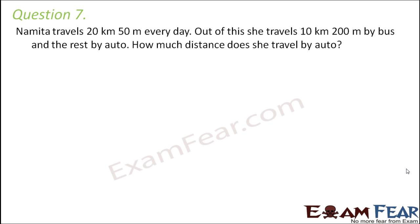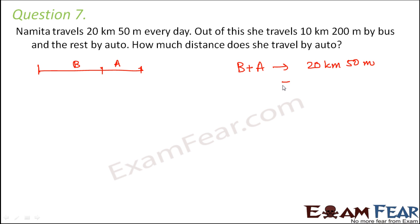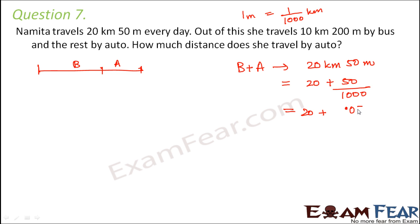Question number 7: Namita travels 20 km 50 meters every day. Of this, she travels 10 km 200 meters by bus and the rest by auto. How much distance does she travel by auto? The total distance is 20 km 50 meters. Converting to kilometers: 20 plus 50/1000 equals 20 plus 0.050, which is 20.05 km.